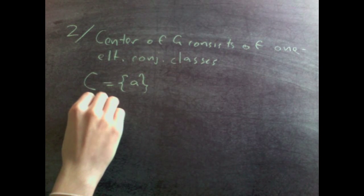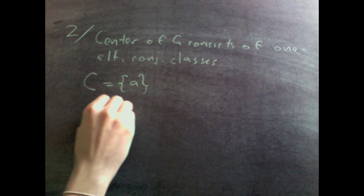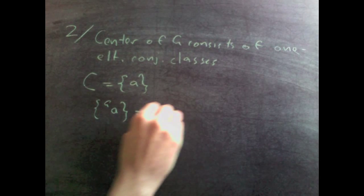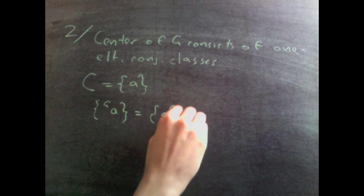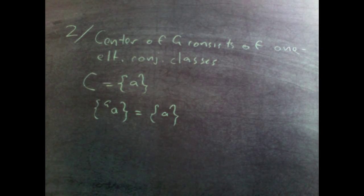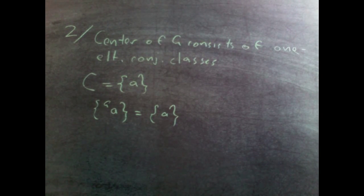Now if I conjugate a by g, I just get a. That's what it means to be a one element conjugacy class. I'm not getting anything new when I conjugate it.